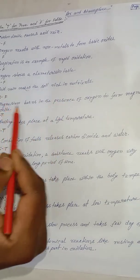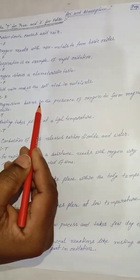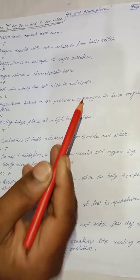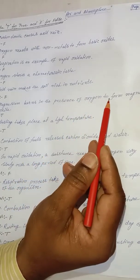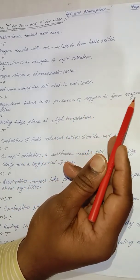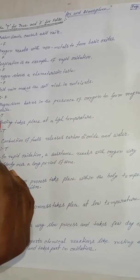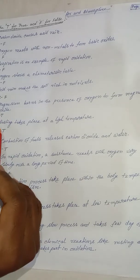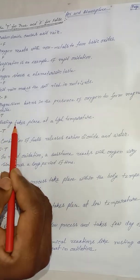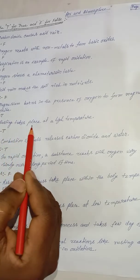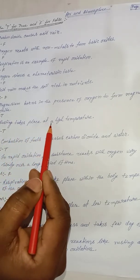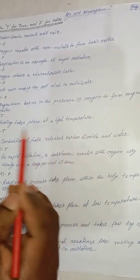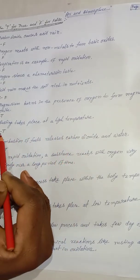Magnesium burns in the presence of oxygen to form magnesium oxide — true. Rusting takes place at a high temperature — true.